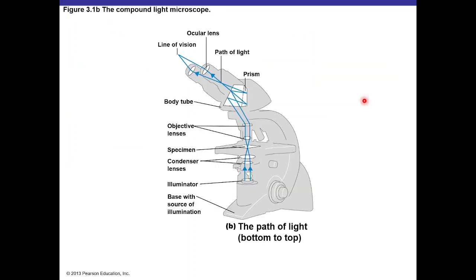Shorter wavelengths passing through the specimen and objective lenses into the ocular lens provide greater resolution. The light follows a path from the source of illumination at the base, through the light bulb filament, through the illuminator, through the condenser lenses, through the specimen, into the objective lenses, and then via a prism inside the body tube, which reflects the light toward the ocular lens and then to your eye.